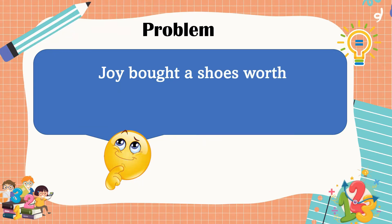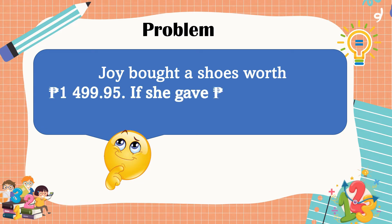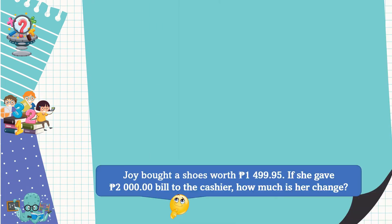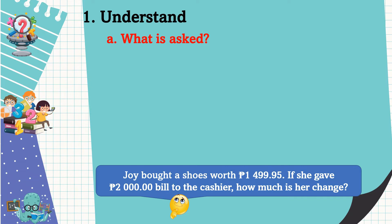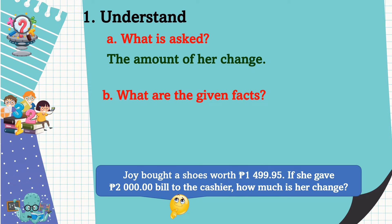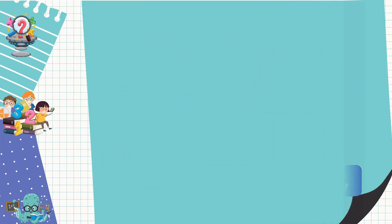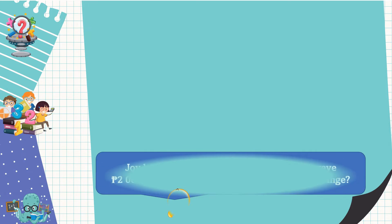Joy bought shoes worth 1,499 pesos and 95 centavos. If she gave a 2,000-peso bill to the cashier, how much is her change? Using the first step, we need to understand the problem. The problem is asking for the amount of her change. The given facts are 1,499 pesos and 95 centavos — the worth of the shoes — and the 2,000-peso bill she gave to the cashier.